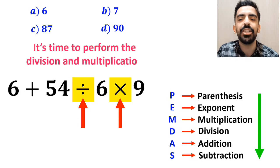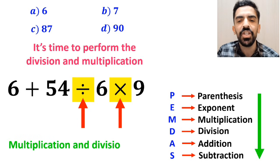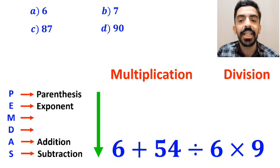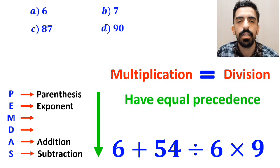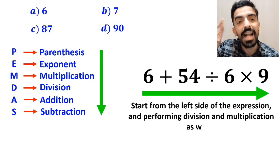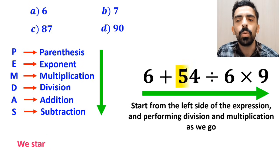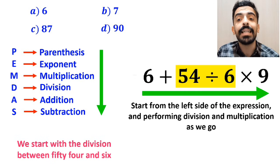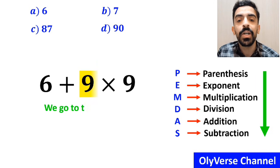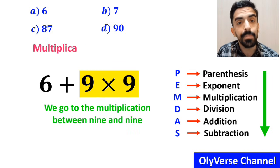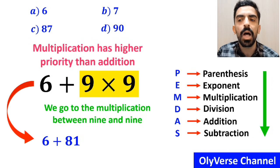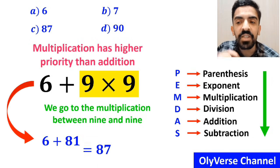Now it's time to perform the division and multiplication, because multiplication and division have higher priority than addition. However, we must pay close attention that multiplication and division have equal precedence. In this case, the best thing to do is to start from the left side of the expression, performing division and multiplication as we go. So we start with the division between 54 and 6, and instead of this expression we can write 6 plus 9 multiplied by 9. In the next step, we go to the multiplication between 9 and 9. So this expression simplifies to 6 plus 81, which ultimately gives us the answer 87.